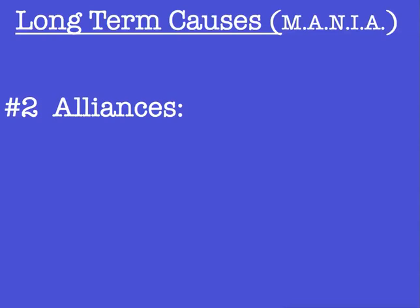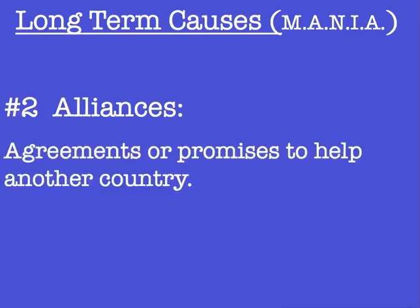The second cause is a system of alliances. Alliances are agreements or promises to help another country. European countries were forming all kinds of alliances with one another — sometimes secret, sometimes out in the open. Remember last year you studied George Washington's presidency, and upon leaving office after two terms, one of Washington's pieces of advice to the American people and future presidents was to stay out of these European alliances. He said that back in the 1790s, and here we are in the early 1900s and it's still a problem.